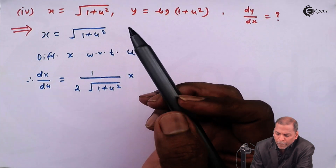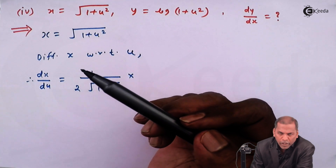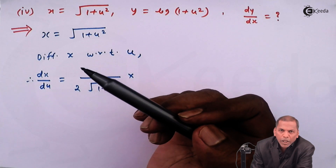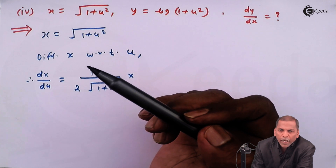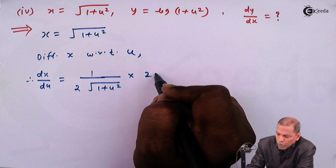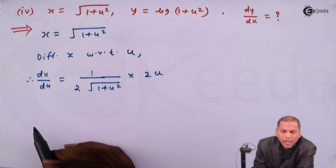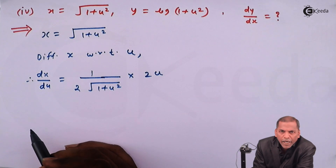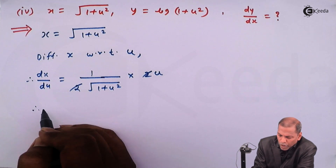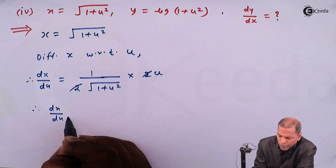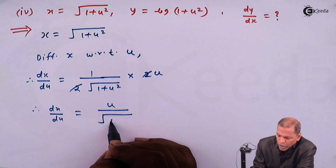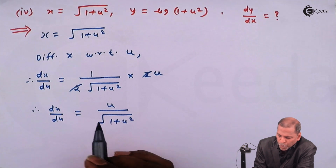into the derivative of the inner function — that is, the function present inside the square root — which is the derivative of 1 plus u squared. Since 1 is a constant its derivative is 0, and for u squared the derivative is 2u, so we multiply by 2u. Cancelling 2 from numerator and denominator, we have dx upon du is equal to u upon under root of 1 plus u squared.